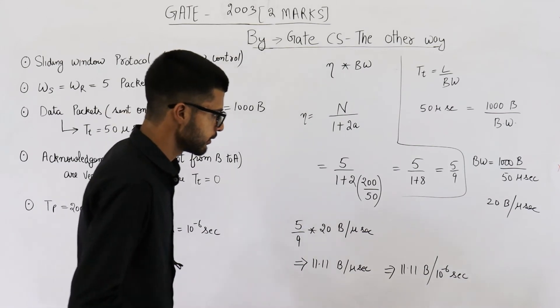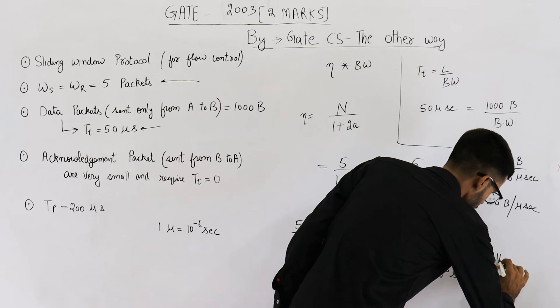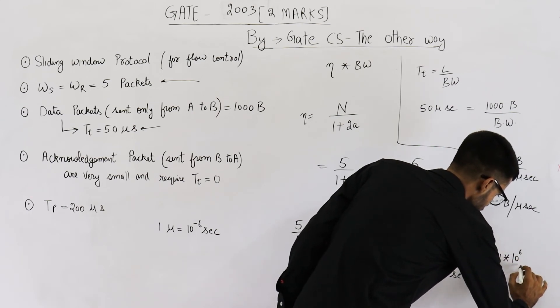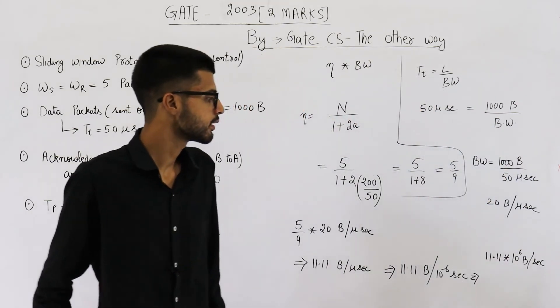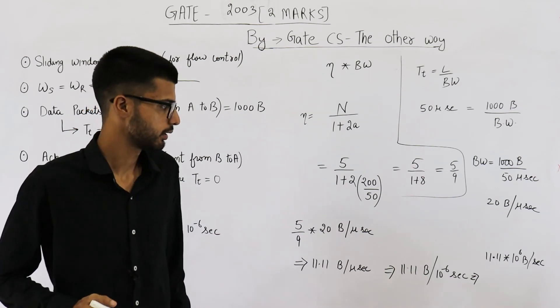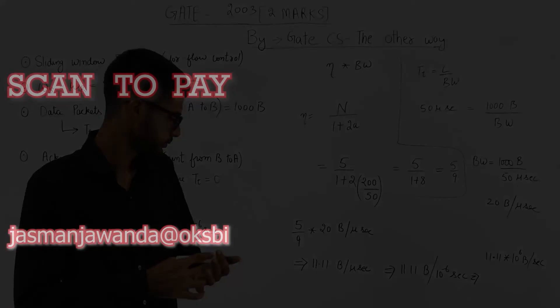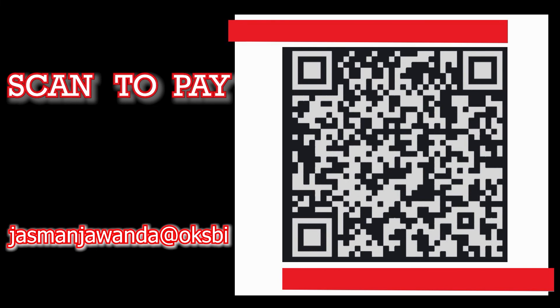We are going to get 11 into 10 raised to the power 6 bytes are sent per second. So answer is 11 point 1111 into 10 raised to the power 6 BPS. Best option is correct. Stay tuned.